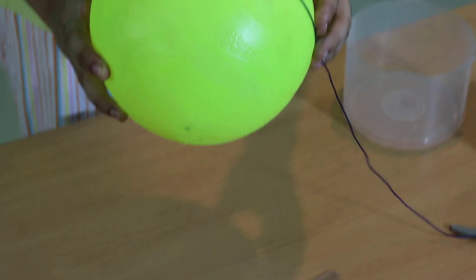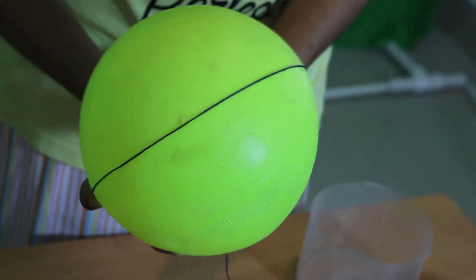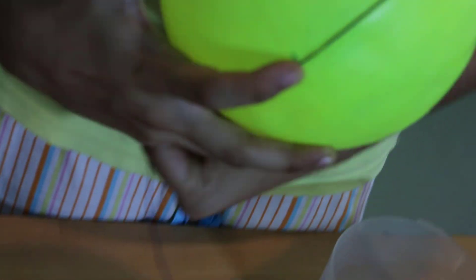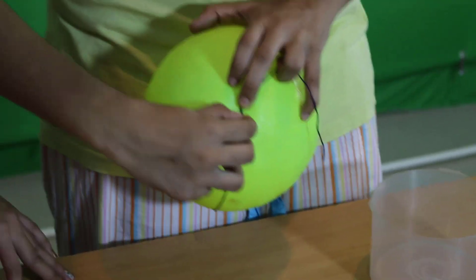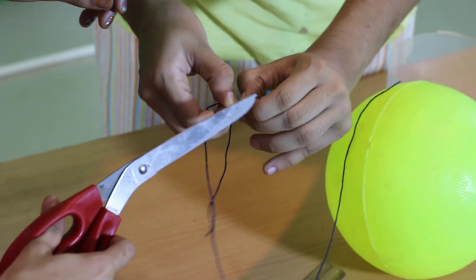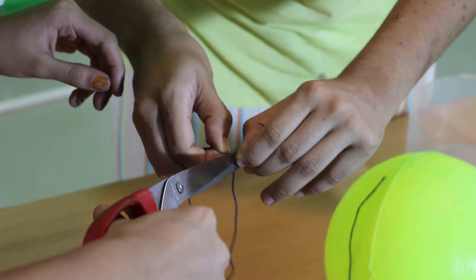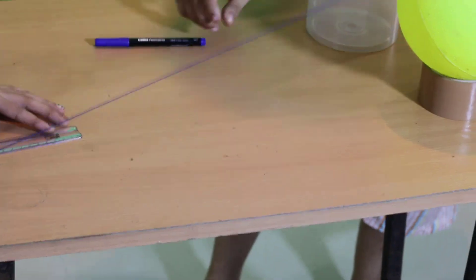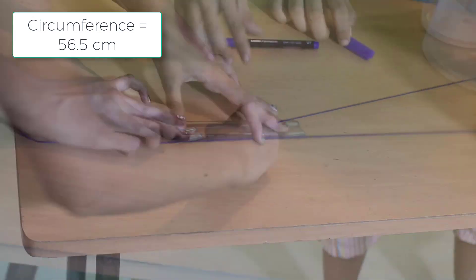To do this, take a thick thread and measure the circumference of the ball by circling the thread around the ball. And then, measure the thread. In our case, the circumference is 56.5 cm.